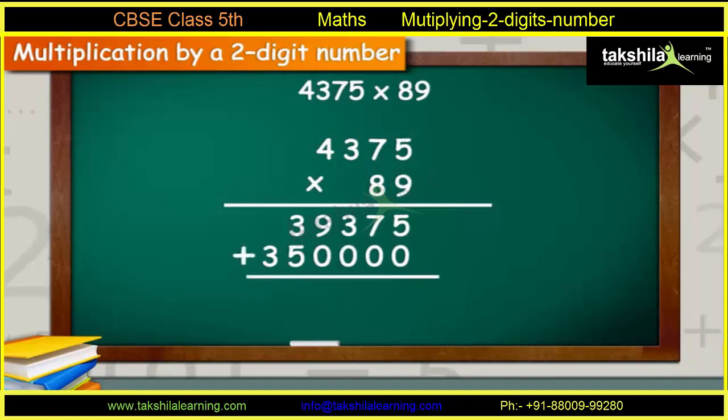Now, add all the numbers together. The final sum comes out to be 3,89,375. This is your answer.